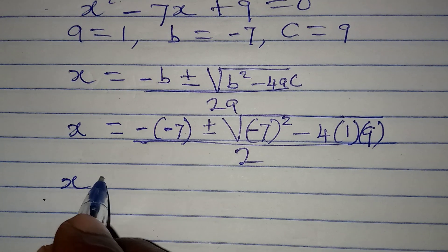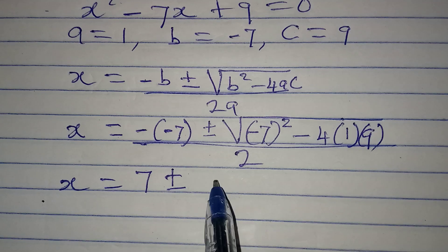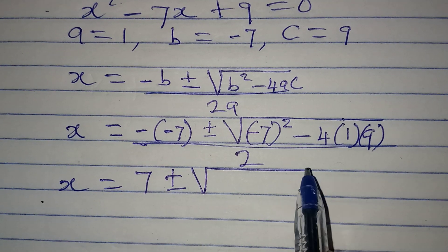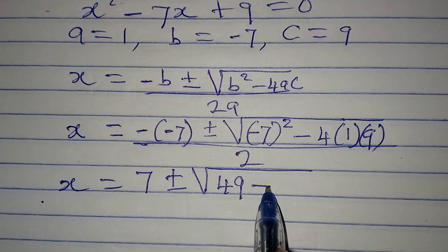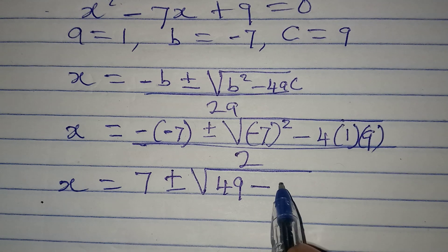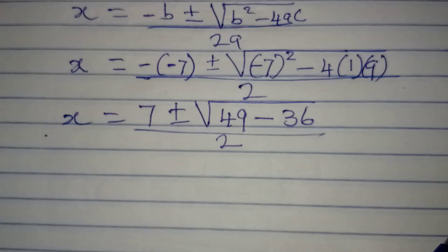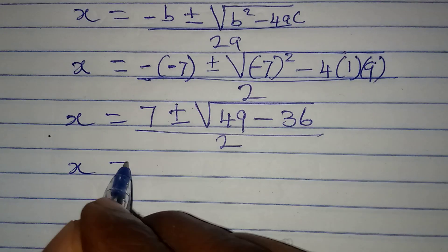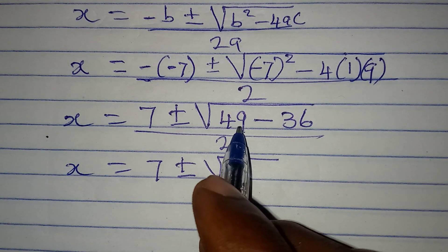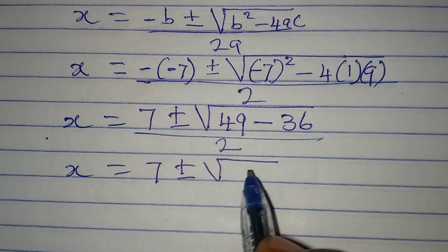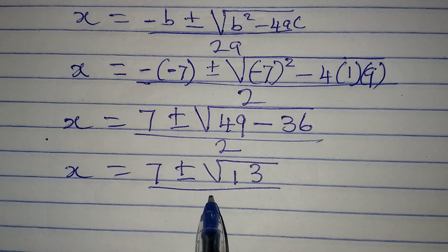x will be equal to: negative negative gives us positive 7, plus or minus. Minus 7 squared is 49, then minus 4 times 9 will give us 36. And this is over 2. Taking a step forward, x is equal to 7 plus or minus, and 49 minus 36 will give us 13. So we have 7 plus or minus square root of 13, over 2.